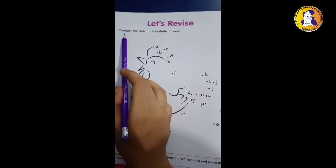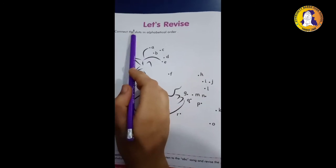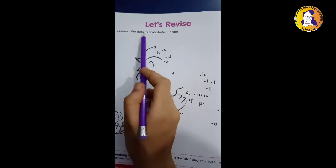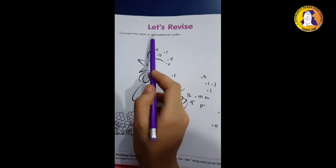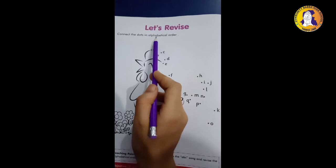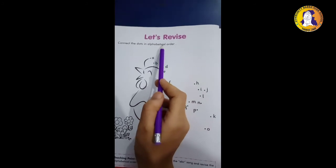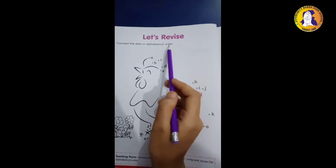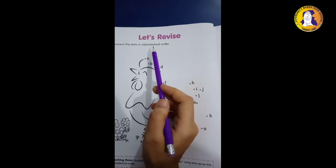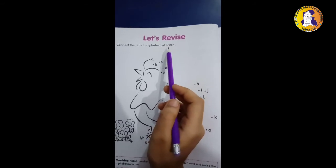C O N E C T. Connect T H E D O T S. Dots I N A L P H A B E T I C A L. Alphabetical O R D E R Order. Connect the dots in alphabetical order and color it.